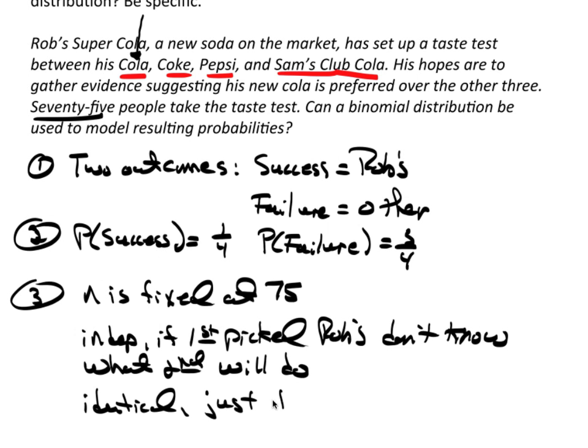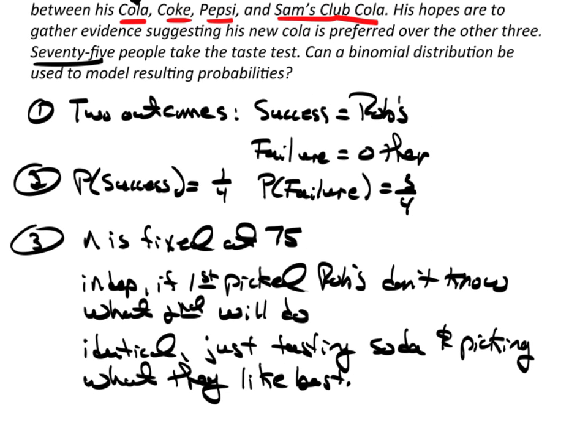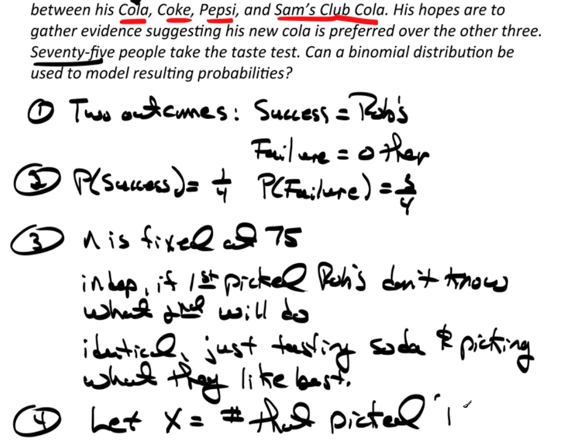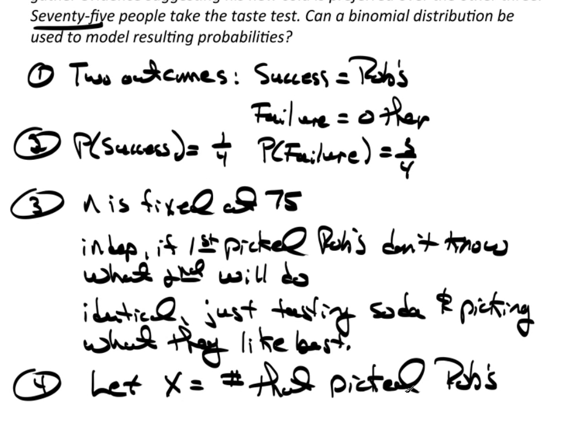They're identical. They're just tasting soda and picking what they like best. That's it. Just the same thing over and over again. They're just tasting all those sodas saying, I like that one the best. That's how they're identical. So here I would say, I'm going to let X be the number that picked Rob's. So this is a binomial and we could use a binomial to calculate probabilities.